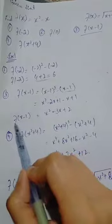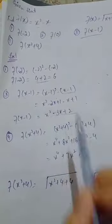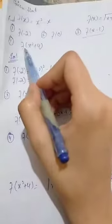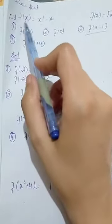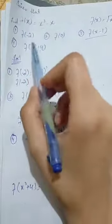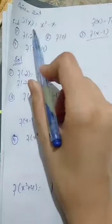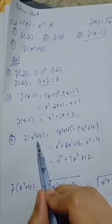The value of f of x minus 1 we found. Now for f of x squared plus 4, where x is, we put x squared plus 4.